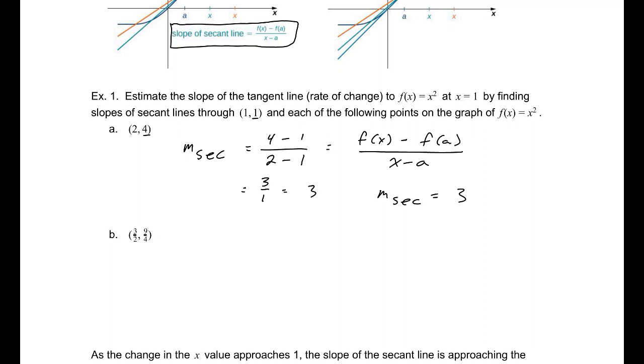Now let's consider the slope of that secant line, but we're going to go through the point (3/2, 9/4). f(x) - f(a) divided by x - a. Our f(x) will be 9/4 minus f(a), which is 1, divided by x, 3/2, minus a, which is 1. That will be 5/4 and 1/2. Simplifying that, we get 5/2. So the slope of our secant line is 5/2.